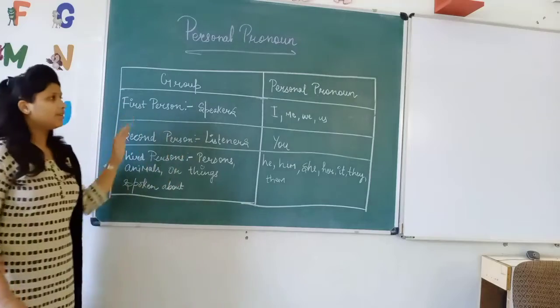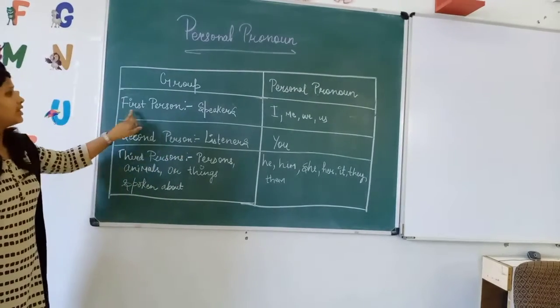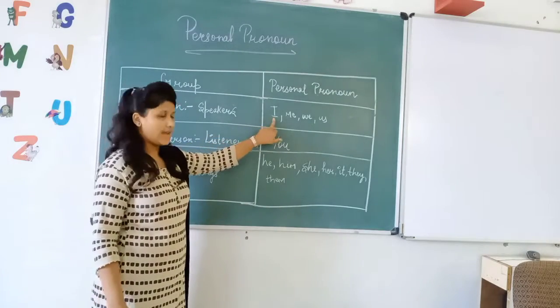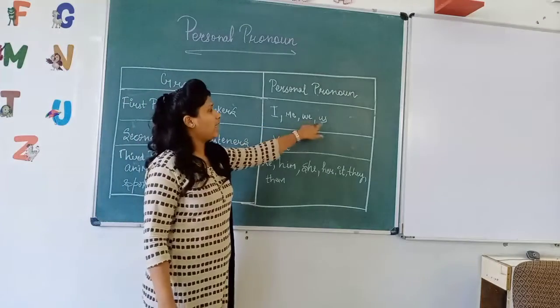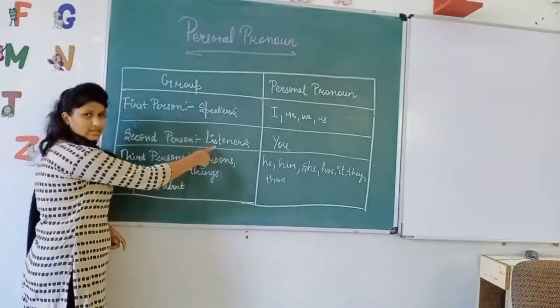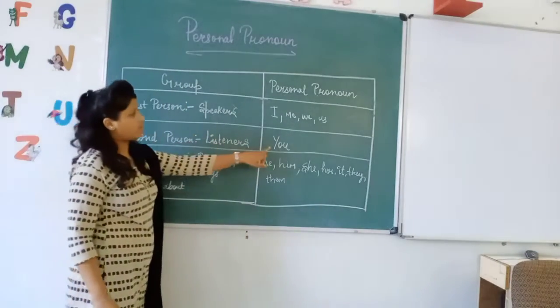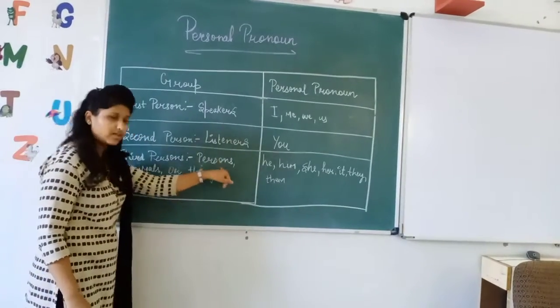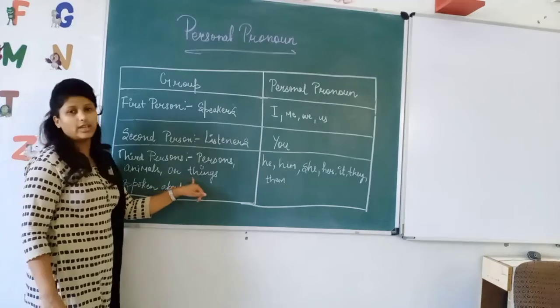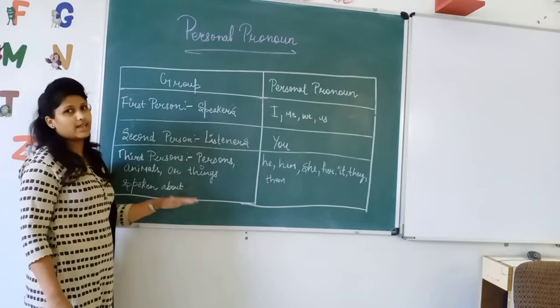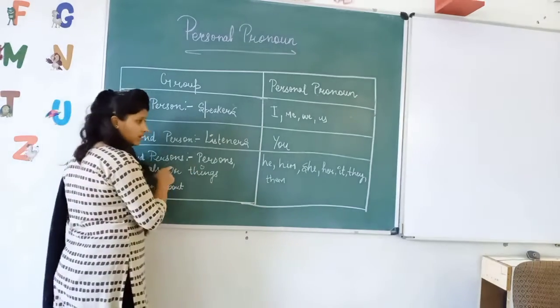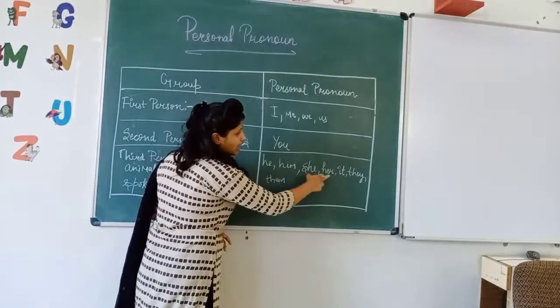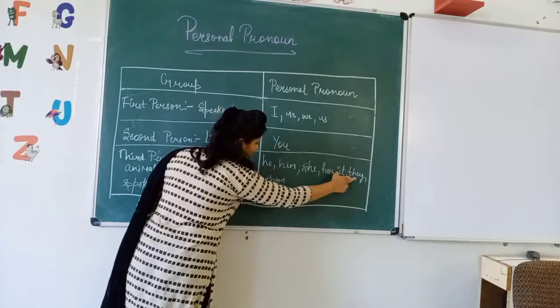Let me repeat once again. First person is the speaker, and for speakers we use I, me, we, us. Second person is the listener, and for listeners we use the word you. Third person can be the group of persons, animals or things for which the sentence has spoken about. For the third person we use he, him, she, her, it, they, them.